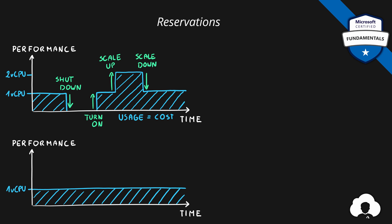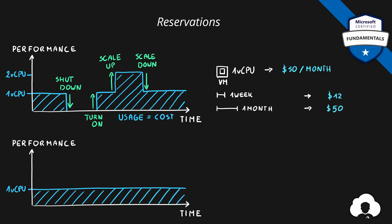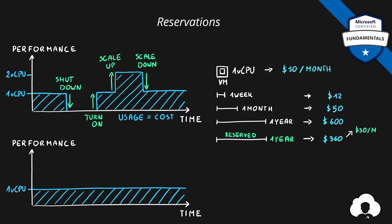Let me show you using an example. Let's say we purchase a virtual machine with one virtual core priced at $50 per month. Using it for one week costs $12; for one month, $50; for an entire year, $600. But if you know you'll use it for a full year, you can reserve that capacity and commit to one virtual core for the entire year. Microsoft will give you a discount, dropping the cost to $360 a year — just $30 per month — that's a 40% discount.